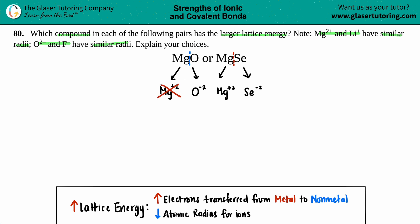The only difference is the oxygen and the selenium. When trying to increase lattice energy, there are only two things you have to worry about: the amount of electrons transferred from the metal to the nonmetal, and the atomic radius for the ions.